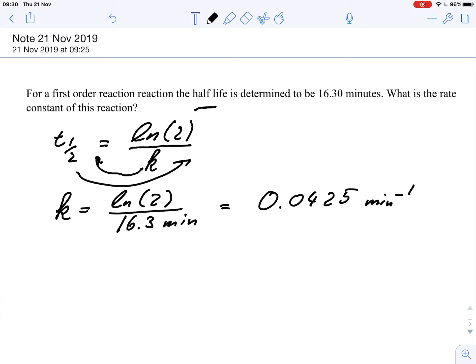So this is how you calculate the rate constant from a half-life. I hope this makes sense.